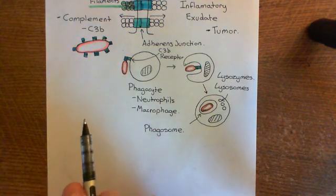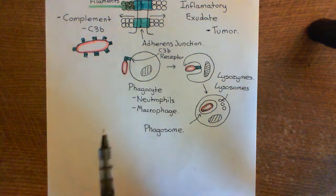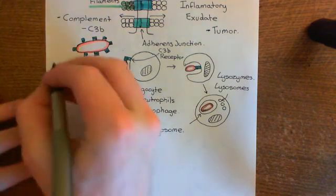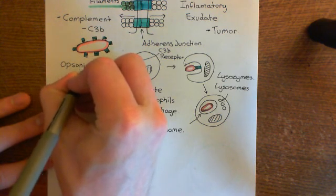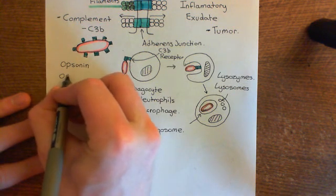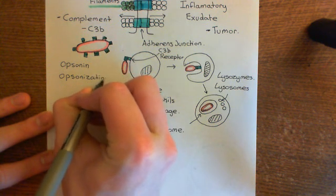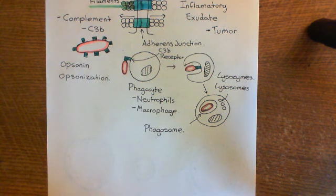This is a way of clearing the pathogen, and we're going to talk about how we recruit these phagocytes — that's the main topic for this video. C3B opsonises the pathogen — it's called an opsonin — and it increases the chance of the pathogen being phagocytosed if the pathogen is covered in C3B. That process of increasing the chance of phagocytosis is what's known as opsonisation. We'll continue this discussion in the next video.